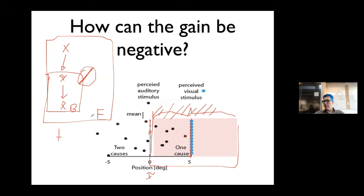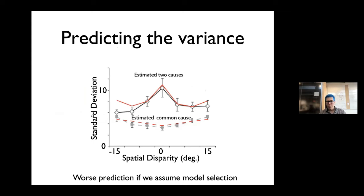We can also use the same model to predict the variance in human behavior. You see the cases where subjects say two causes versus one cause, and as a function of spatial disparity you can see the standard deviation of the estimate. When they say two causes, there's much higher standard deviation than when they say one cause — which directly falls out of the model.